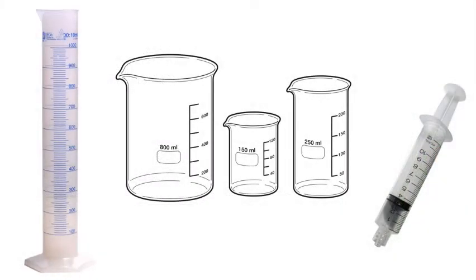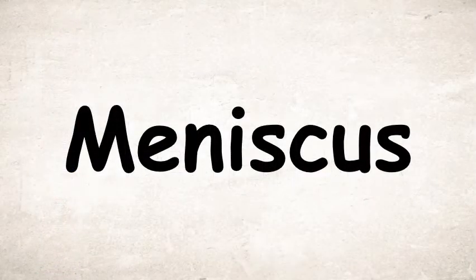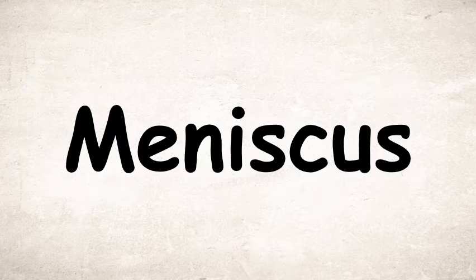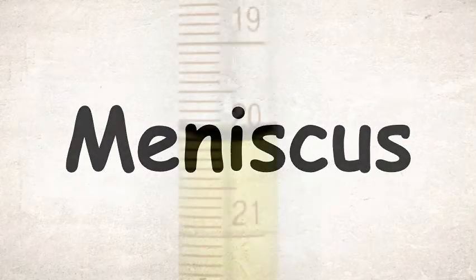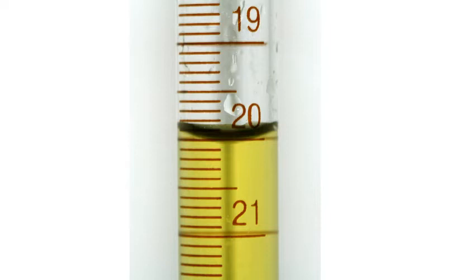To find the volume of an irregular shaped object we need equipment that can measure the volume of a liquid. In our laboratories we usually find measuring cylinders, beakers, syringes, etc., which are all graded to help us measure the volume of a liquid. When measuring volumes, there is one thing we have to be extra careful about for accuracy: this is what is called the meniscus. Notice the black line near the 20 mark — it is not a perfect straight line but is slightly curved downwards.